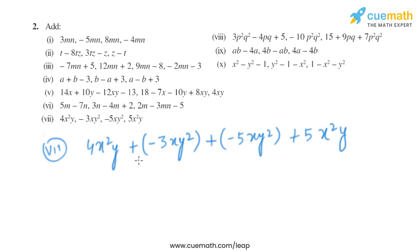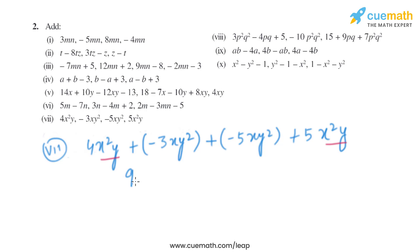Now the seventh part. The terms given are 4x²y, minus 3xy², minus 5xy², and plus 5x²y. The like terms are those with x²y and those with xy². So 4x²y plus 5x²y gives us 9x²y.